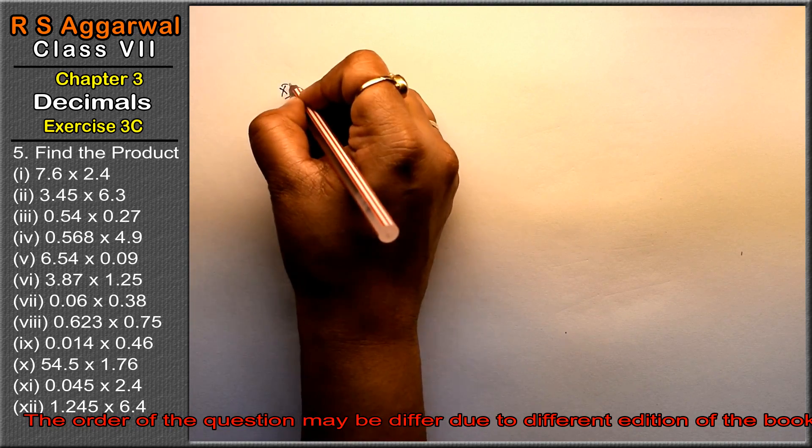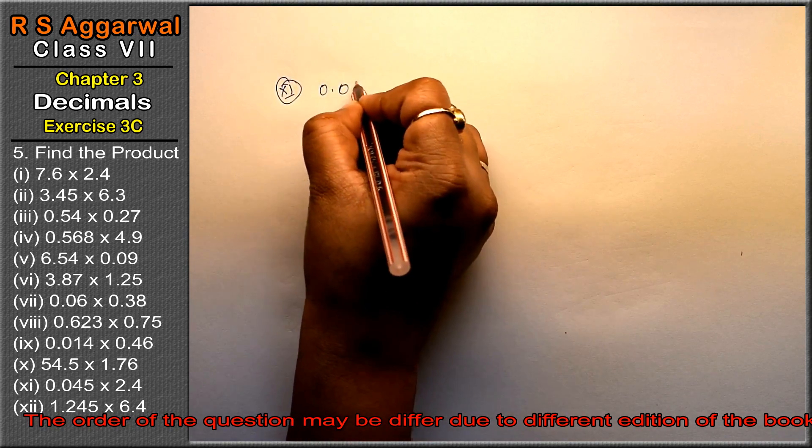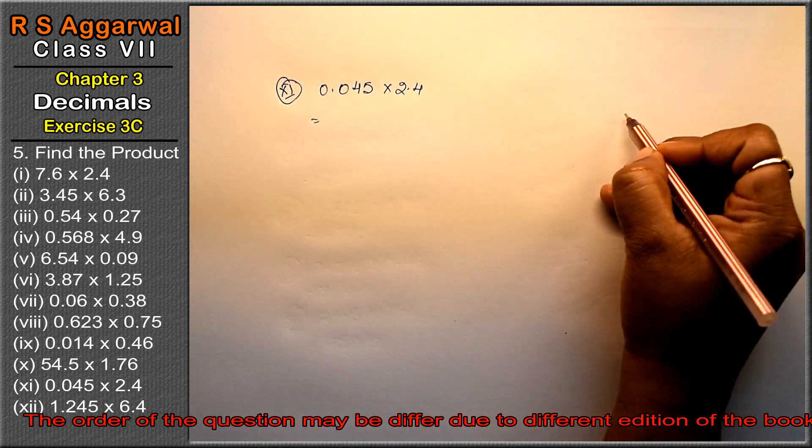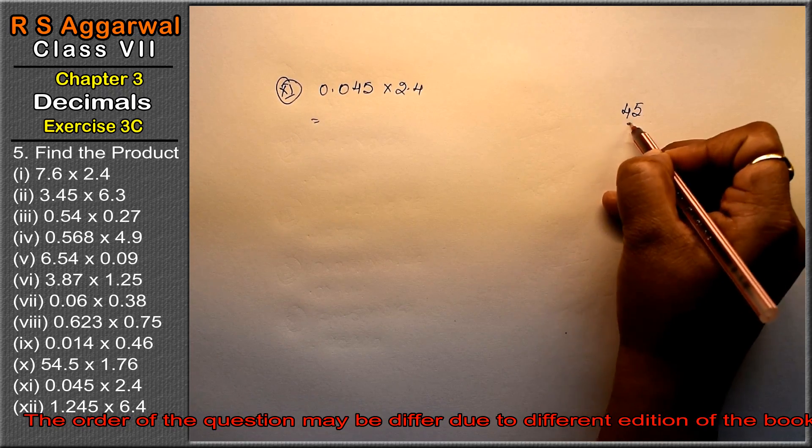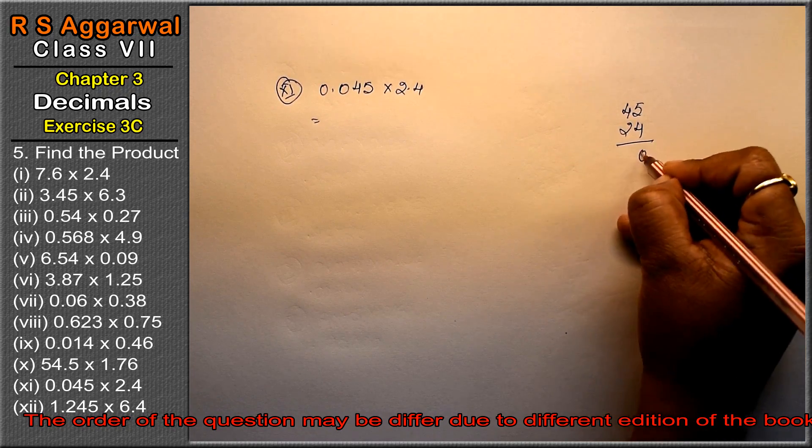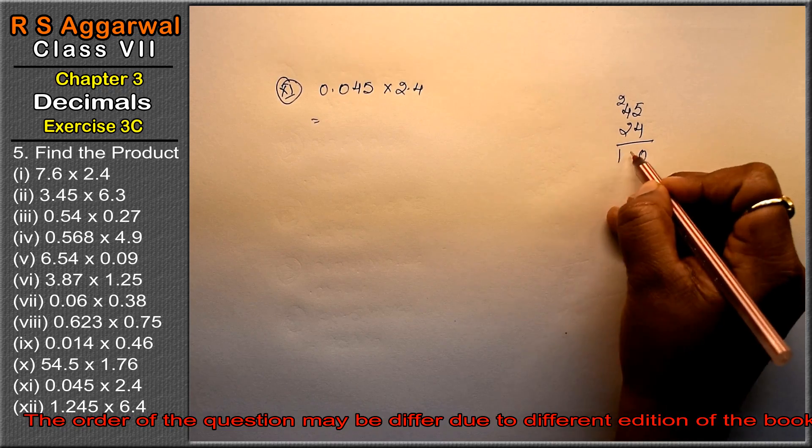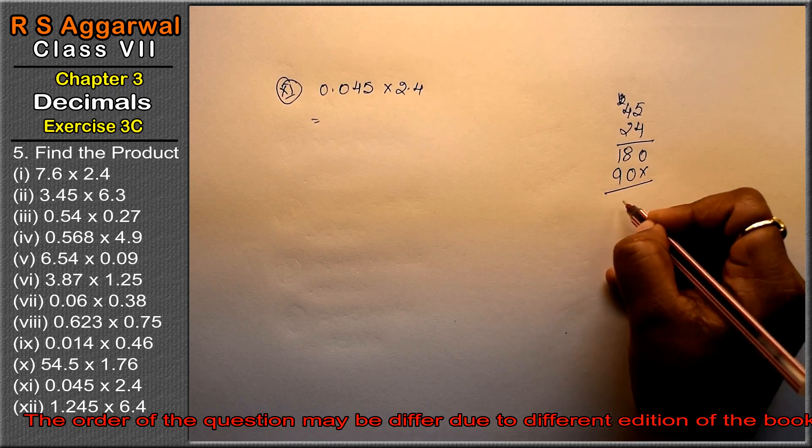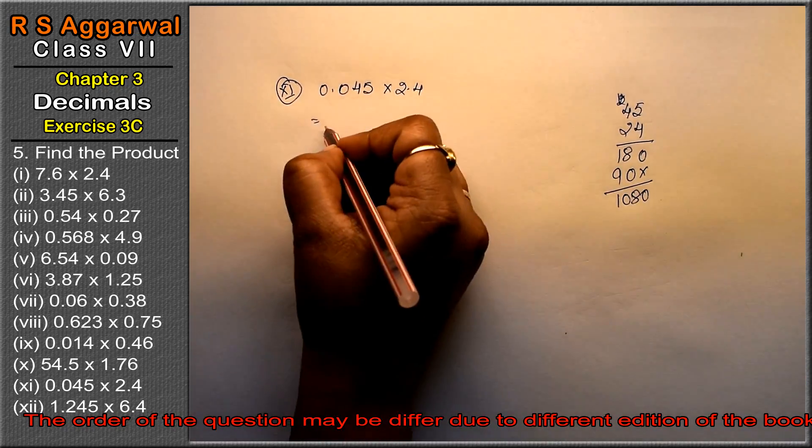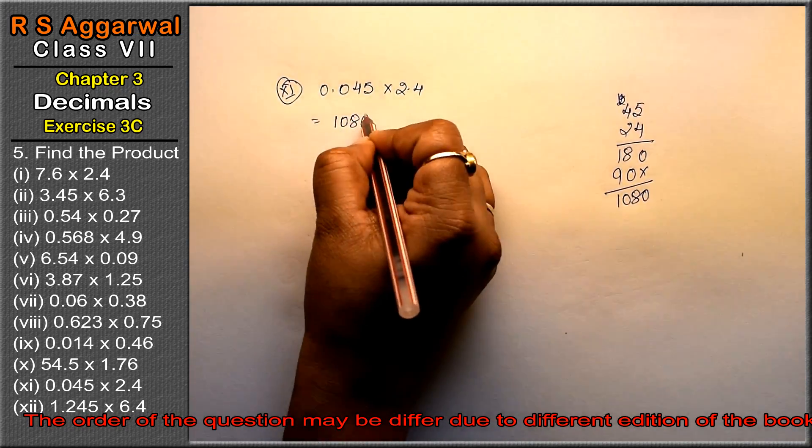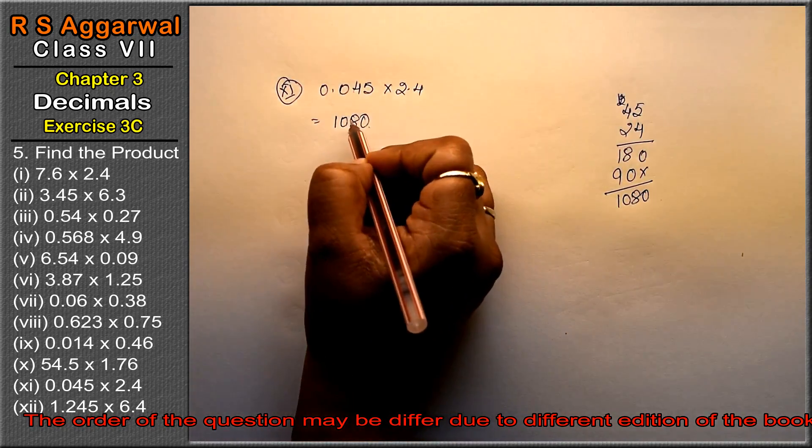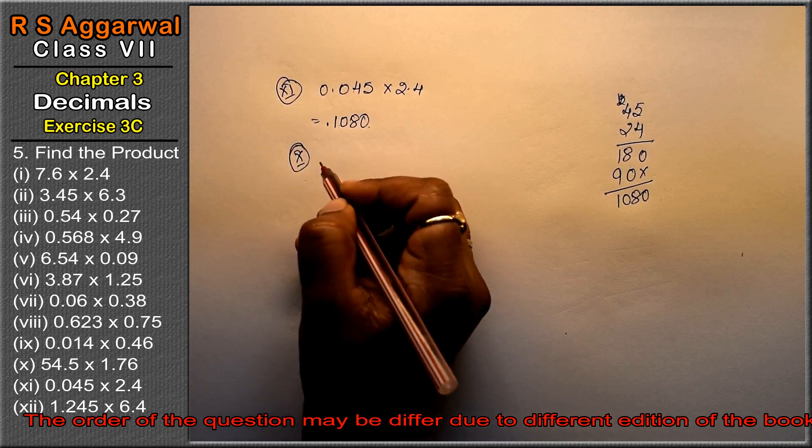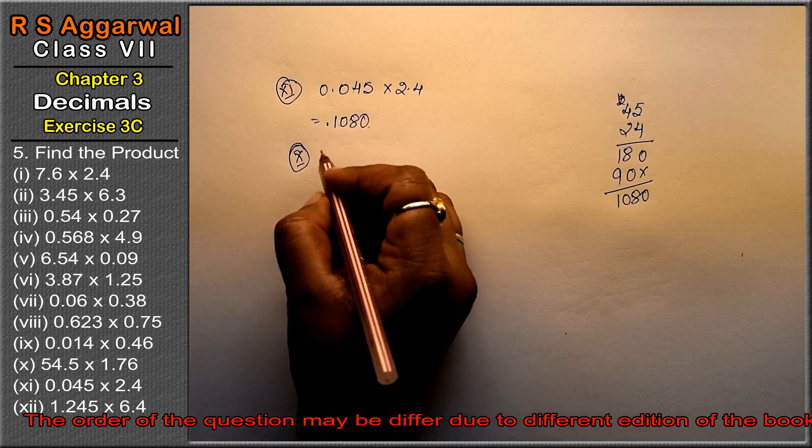Let's do eleventh part: 0.045 into 2.4. Multiply 45 by 24. 4 times 5 is 20, carry 2. 4 times 4 is 16, 17, 18. Then 2 times 5 is 10, carry 1. 2 times 4 is 8 and 9. This gives 1080. Point: 3 plus 1 is 4 decimal places. Count 1, 2, 3, 4 from right: 0.1080 is the answer.